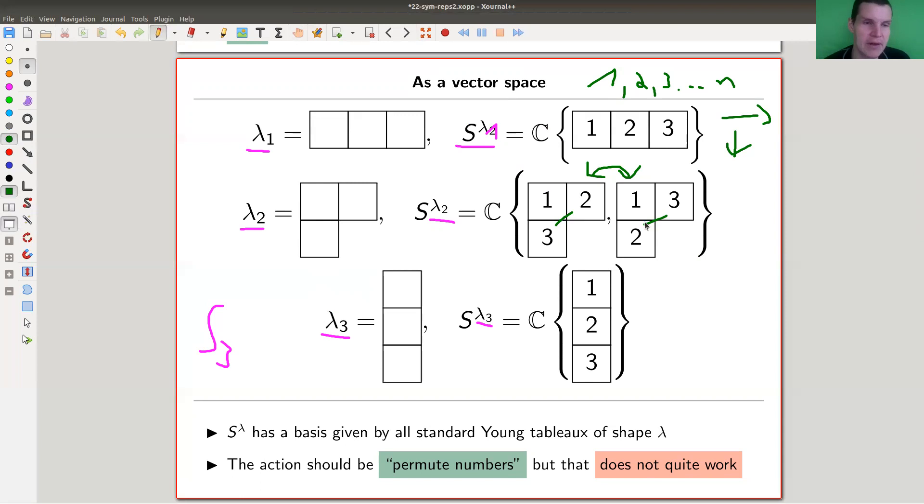Problem is, it doesn't quite work. The problem is my condition on rows and columns to be increasing. If I act on this by swapping one and two, I would get two, one, three, and that's not a basis vector anymore because it doesn't fit my condition on being a standard tableau. The column you see here is non-increasing.